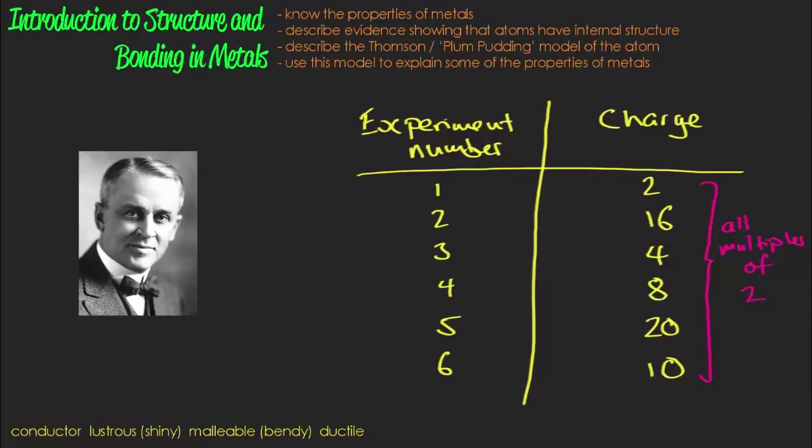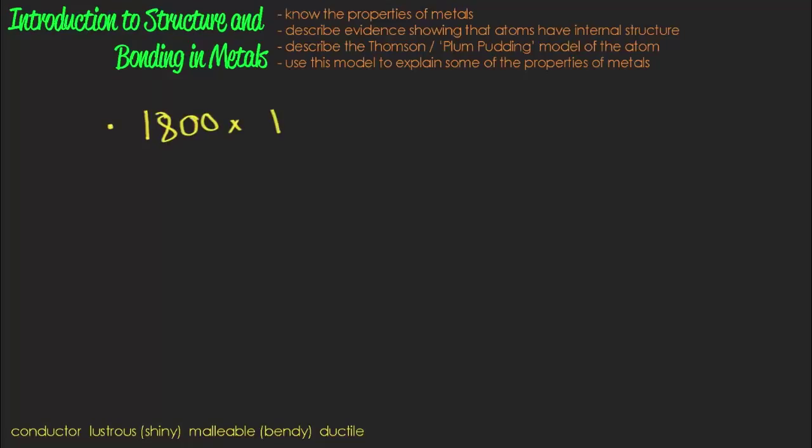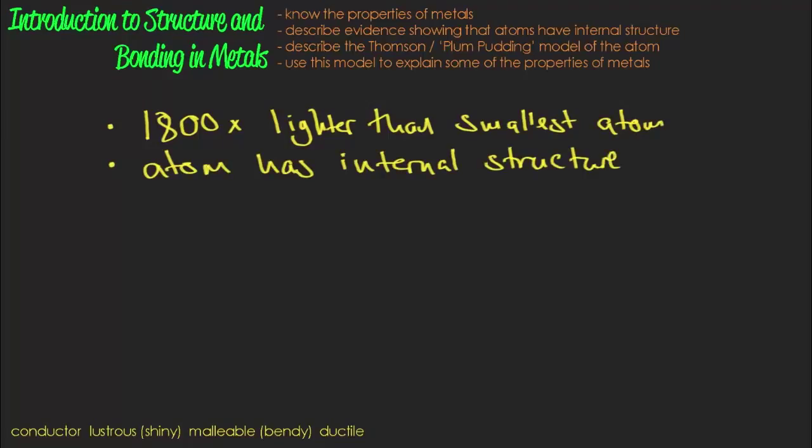Now Millikan's numbers, of course, were a little bit more complicated than these, and the numbers were much, much smaller. But from this he was able to work out the charge on the electron. And because we already knew their mass to charge ratio from Thomson's beam bending experiment, we were now able to find that the mass of these particles was way smaller, about 1,800 times smaller than the lightest atom. The atom itself must have some internal structure.